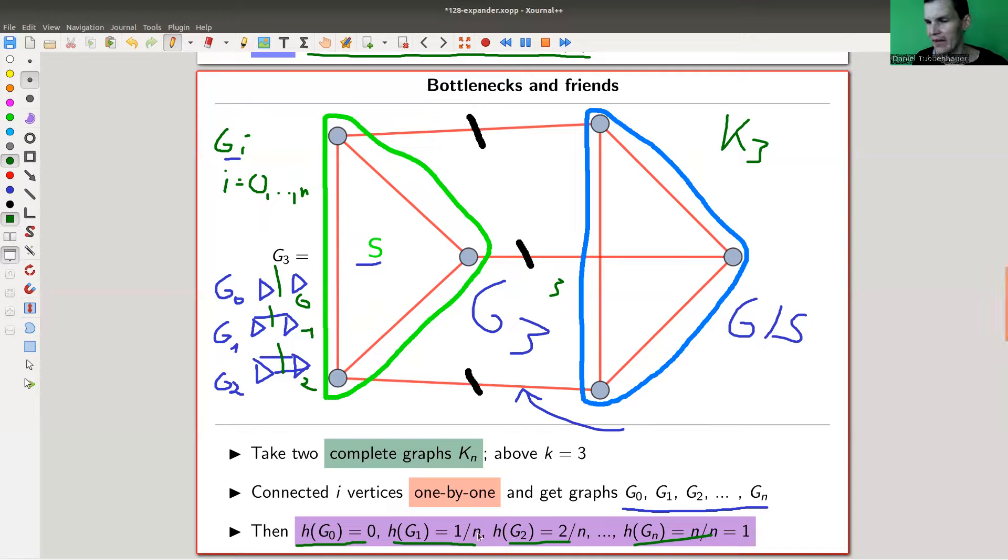And the size of the subset I cut away is always n because it's Kn. So that's why the Cheeger constant of those graphs goes from 0, 1 over n, 2 over n, all the way up to n over n, which is 1. So 1 is large in this setting. So 1 is large and everything close to 0 is small. So 1 over n is really tiny. And my little graph here, the g1 graph, has an obvious bottleneck here, just this connecting edge. So tiny h is really saying bottleneck. Large h means there are essentially no bottlenecks.